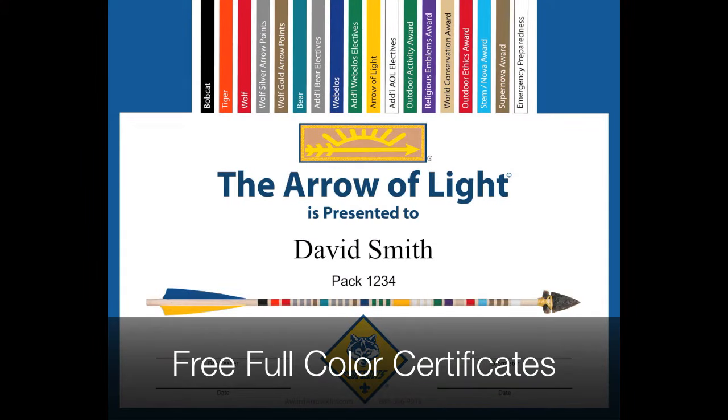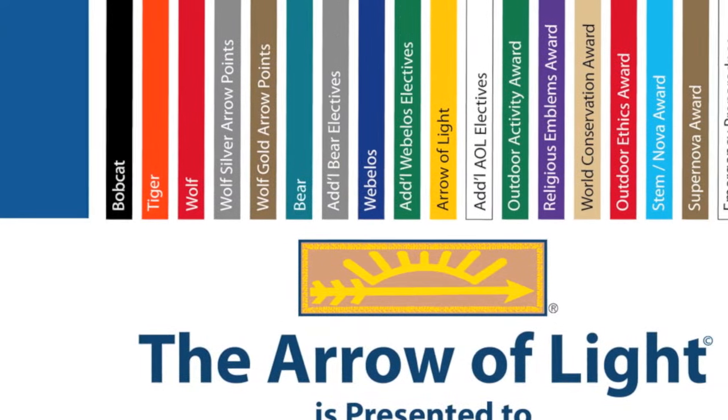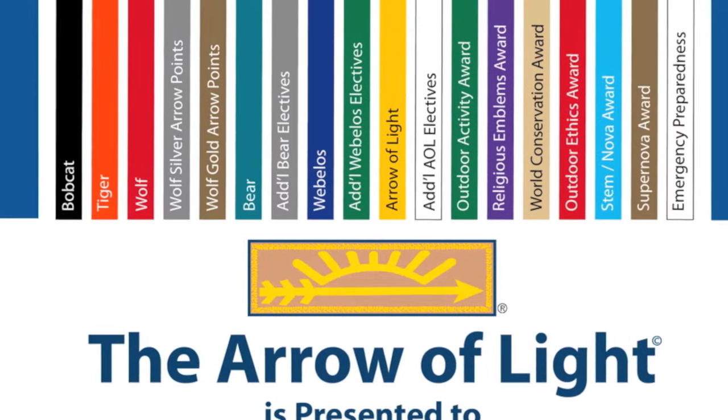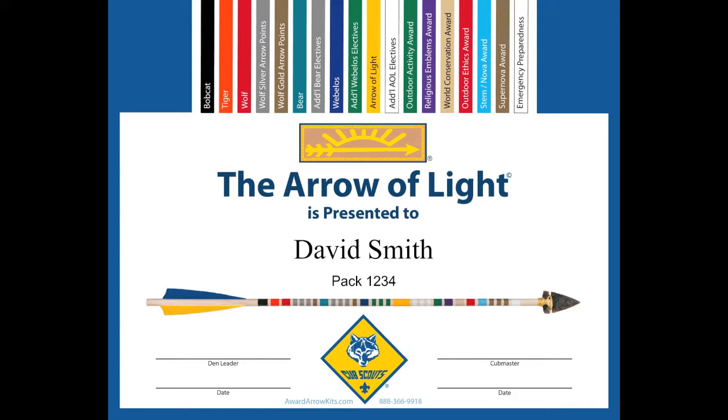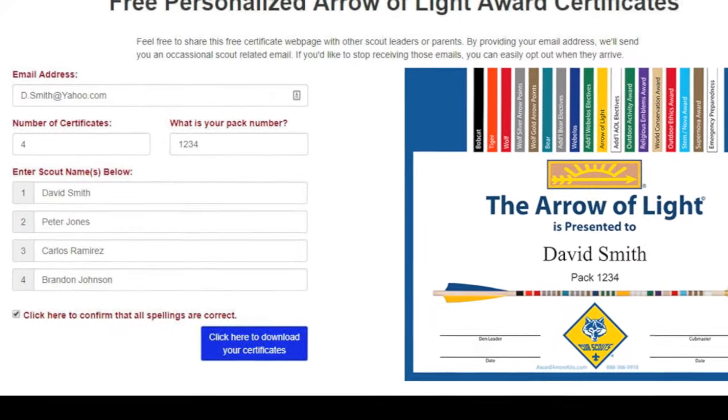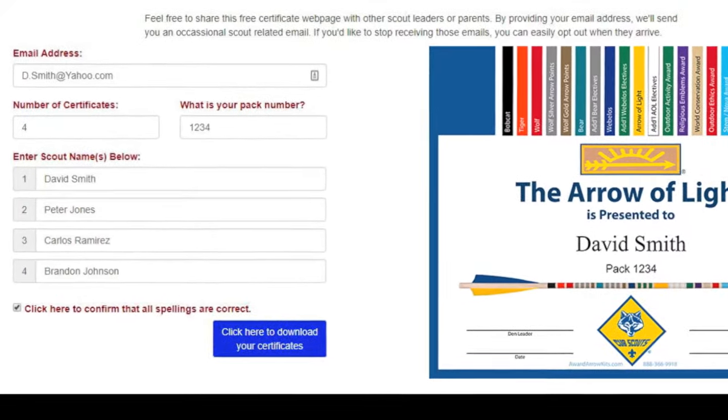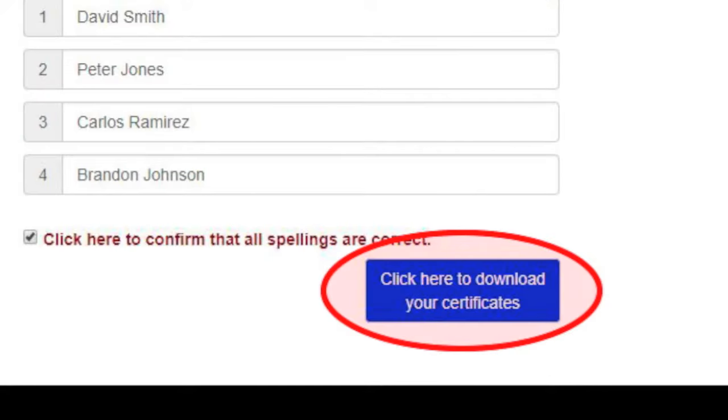Leaders may also want to present each of their scouts with a personalized Arrow of Light certificate. These free certificates list each of the ranks and achievements matching the colors on the ceremonial arrows. Leaders may download these free certificates from awardarrowkits.com. Simply enter your email address, the number of custom certificates desired, your pack number, and the names of each of your scouts.